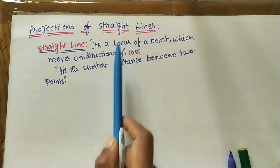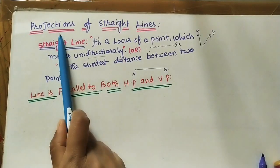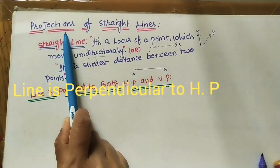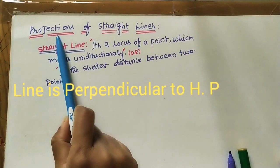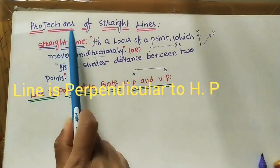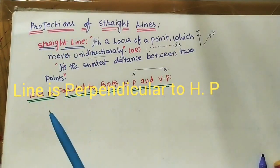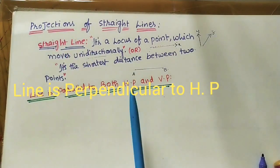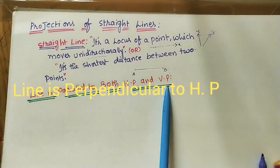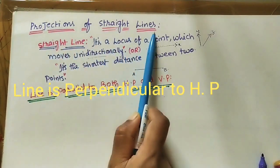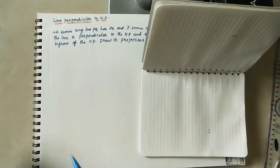Welcome to this channel. Let us discuss how to draw projections of a straight line. Projection means image or drawing — we are taking the front view and top view of the line. In engineering drawing, we use two planes: the horizontal plane (HP) and the vertical plane (VP), and we draw the straight line in these planes.